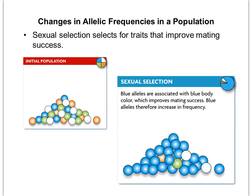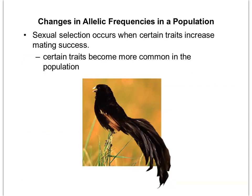Sexual selection is whenever traits are selected that improve mating success. In the example shown, having a blue body color improved mating success, therefore blue alleles become more frequent in the population. We see sexual selection a lot in animals, particularly birds — think of ones with elaborate feathers that attract mates. Whatever trait increases mating success is the trait that becomes more common in the population.